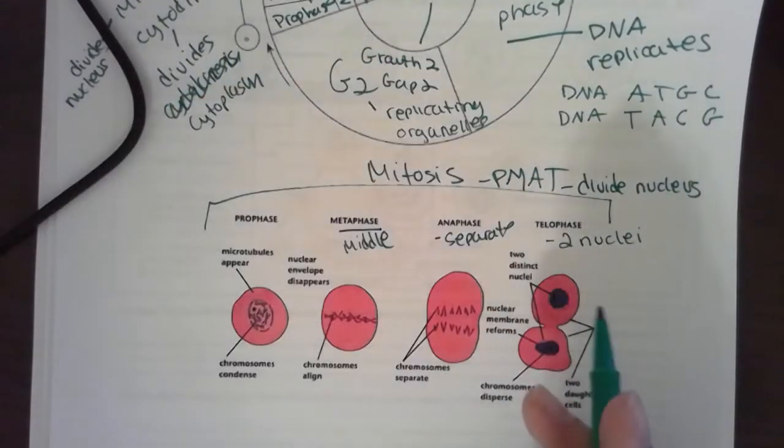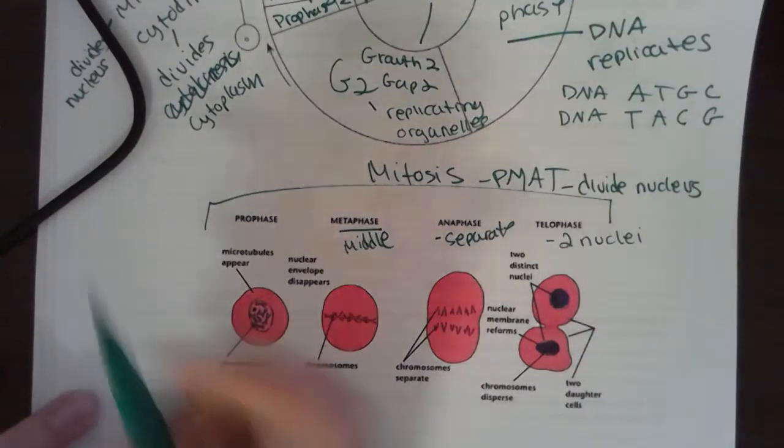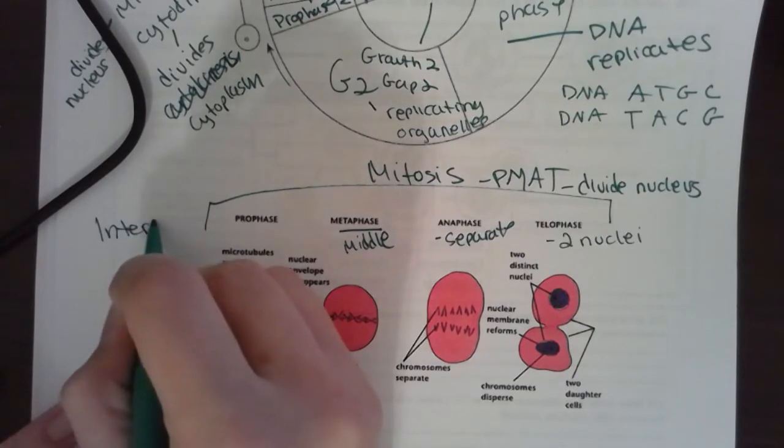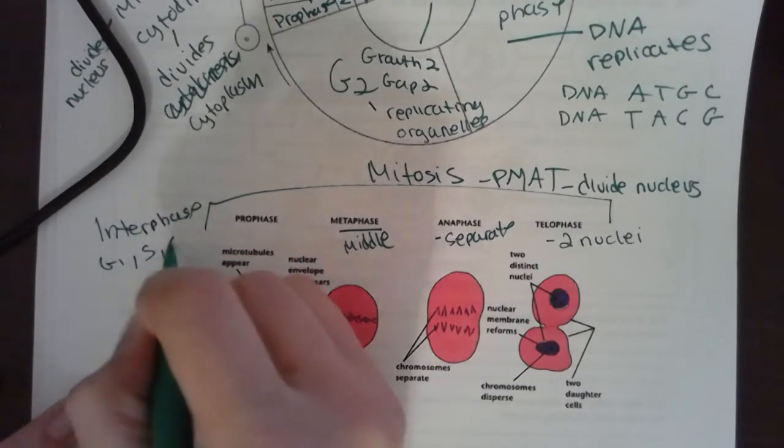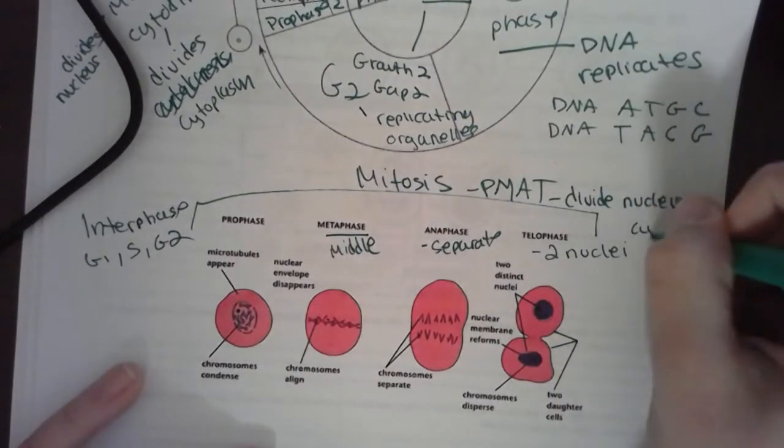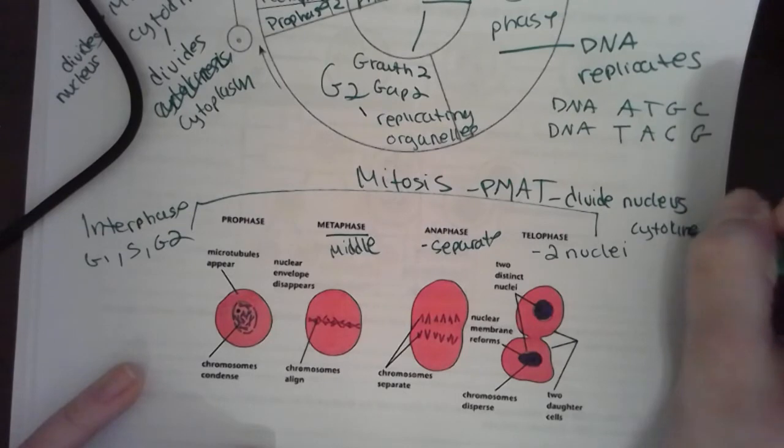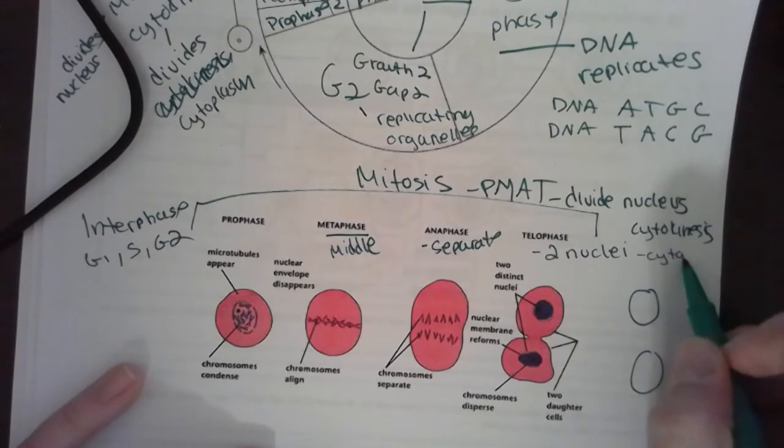This is like I'm almost almost dividing into two cells. So before mitosis was interphase - that was the G1, S, and G2 - and then afterward was cytokinesis. And that's when I finally get my two cells because my cytoplasm has divided.